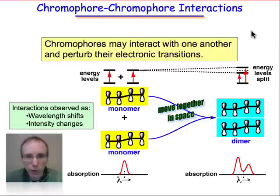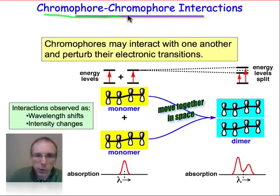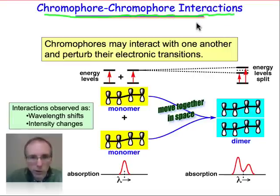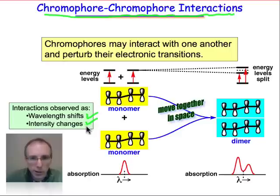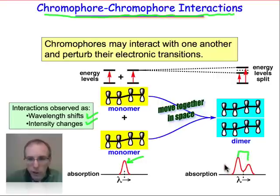Besides environmental factors, electronic transitions are also sensitive to the interactions between two chromophores that approach one another in space. These interactions can show up in electronic transitions as shifts in wavelength of λmax as well as in intensity changes. In fact, you can even see the appearance sometimes of completely new bands — one band might split into two new bands. All of these changes associated with the interaction between two chromophores can be explained by the changes that take place in the energy levels.